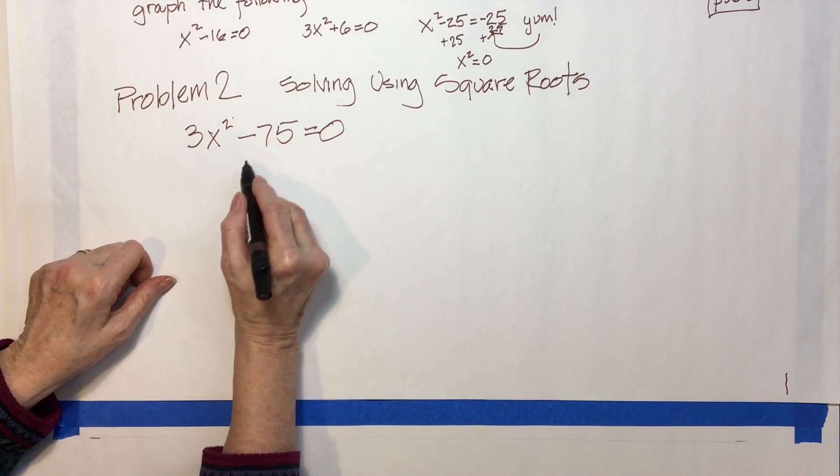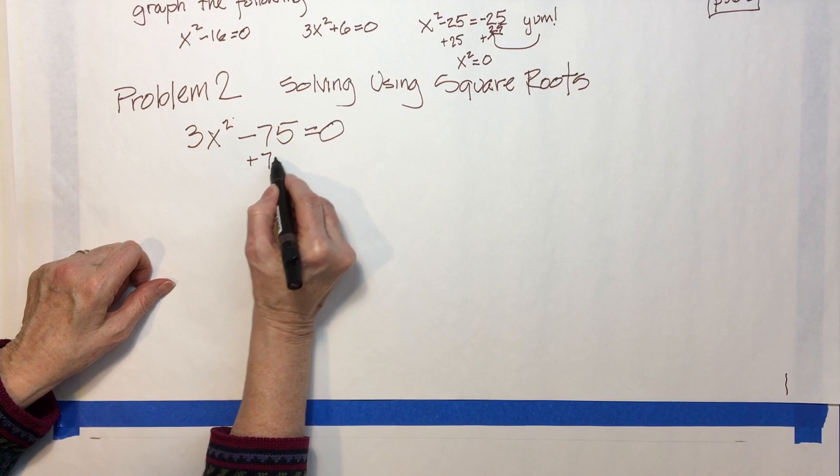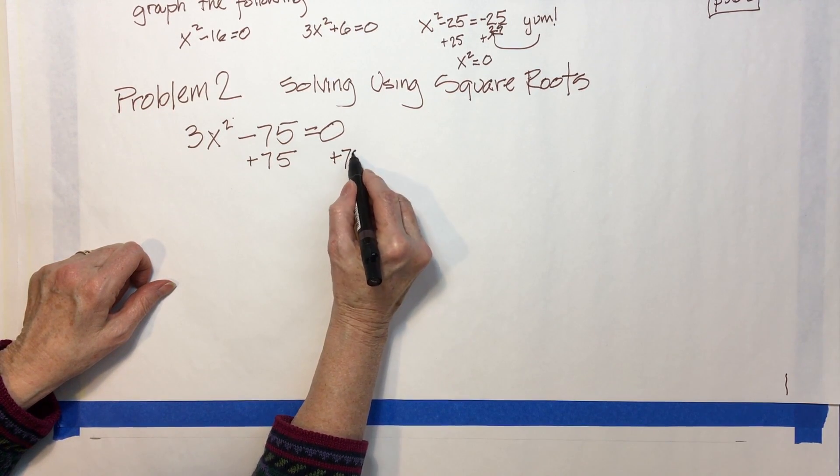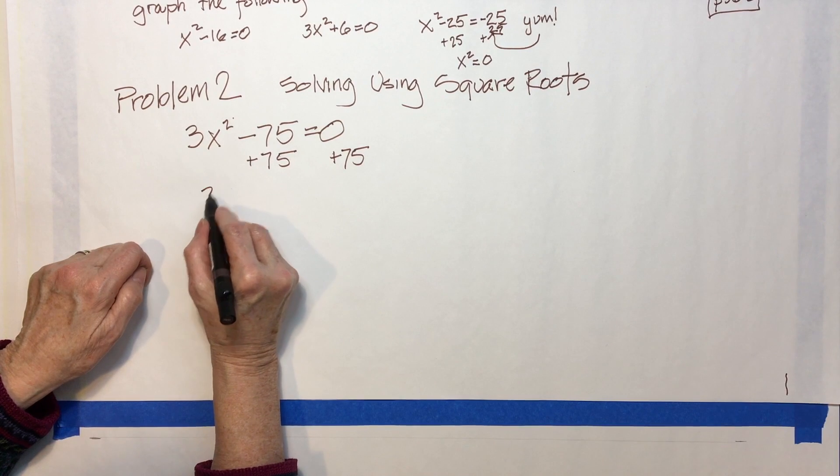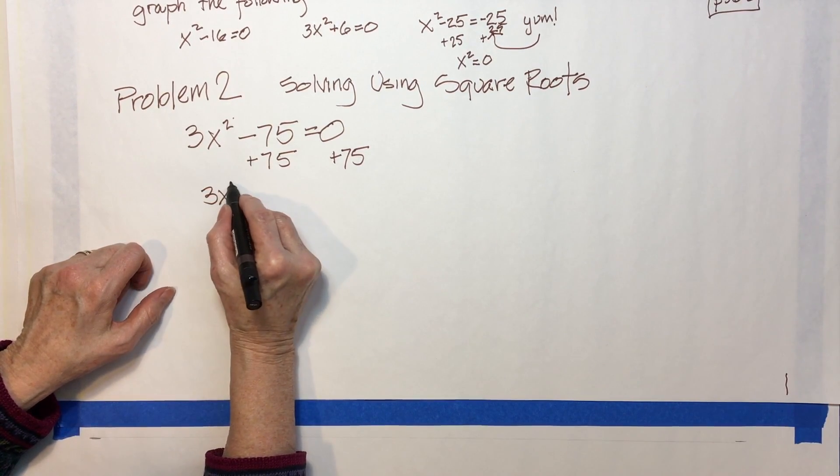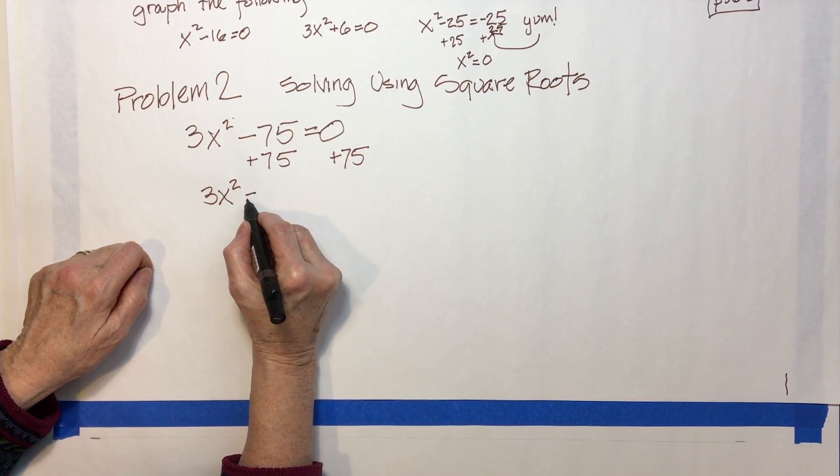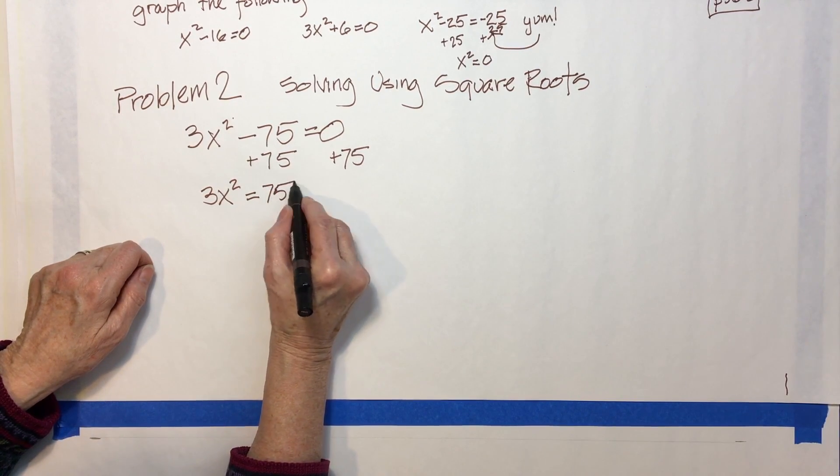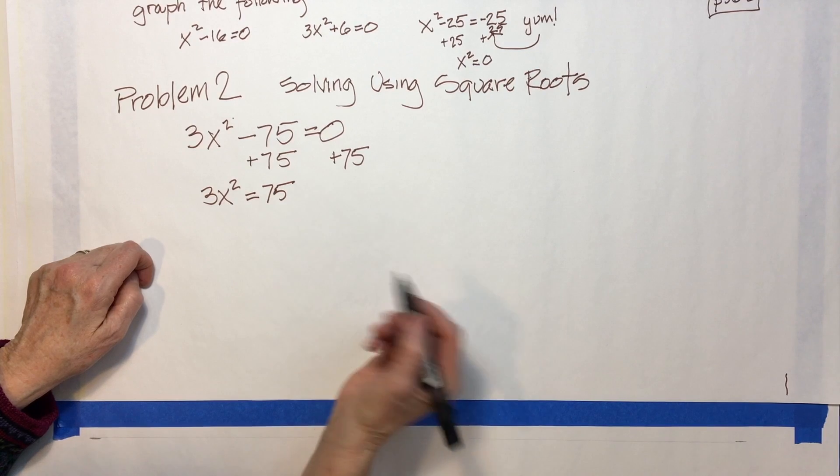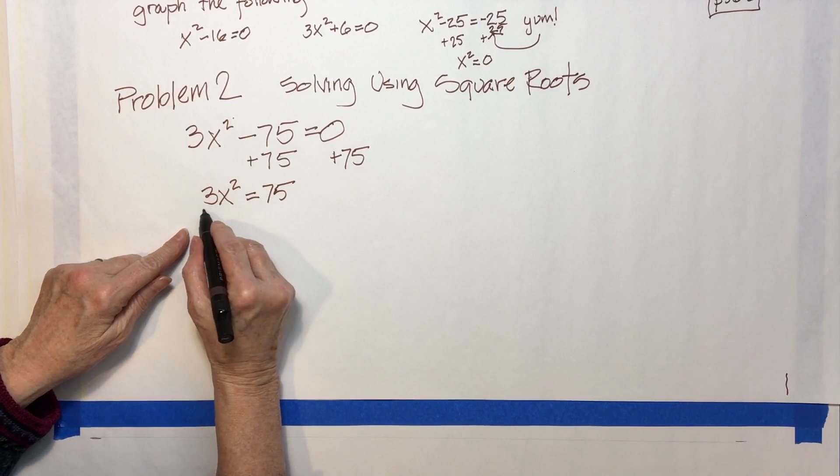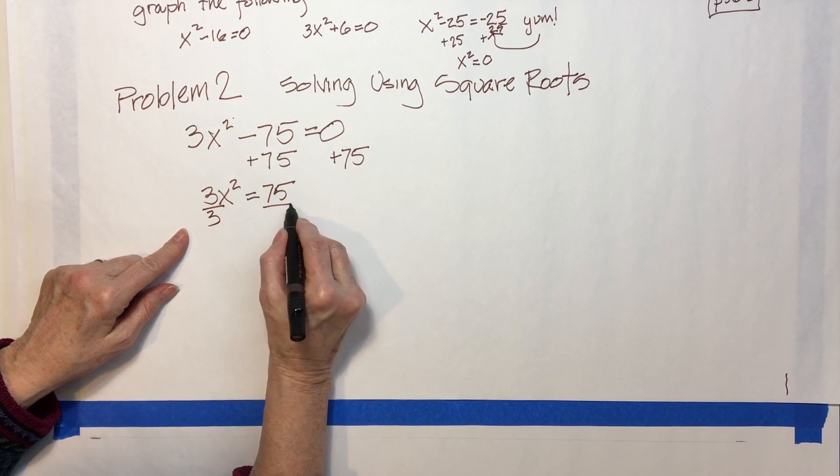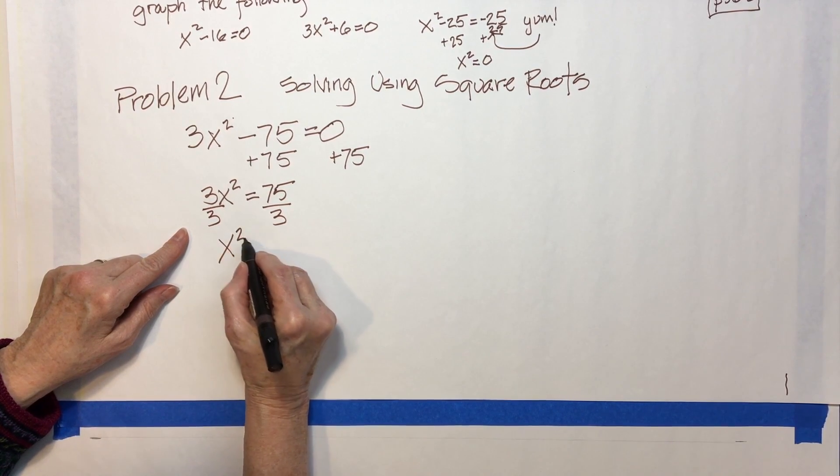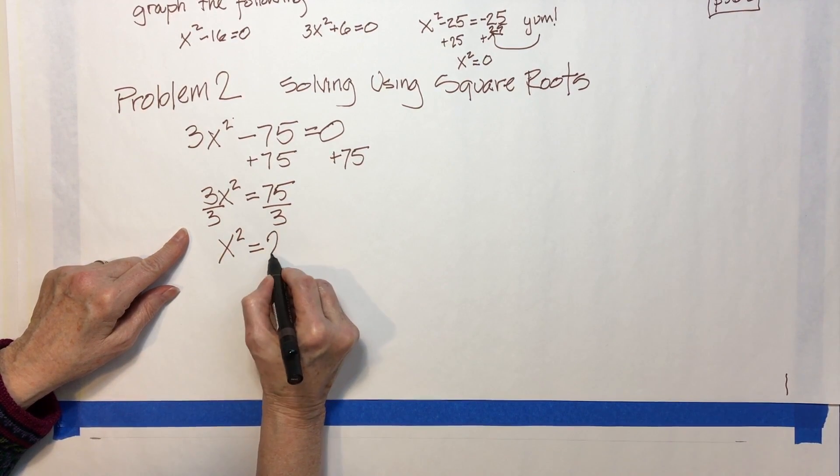I think that my first move is going to move this over. And then, of course, rewrite. 3x squared now equals 75. I think I'm going to divide both sides by 3. So now, x squared equals 25.